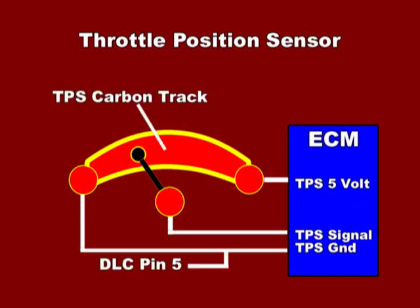Also check the ECM ground at its connector or at pin number 5 of the DLC connector. A skewed TPS ground will make it output the wrong signal, causing transmission shifting and drivability problems.